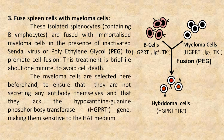The myeloma cells are selected beforehand to ensure that they are not secreting any antibody themselves, and they lack the hypoxanthine guanine phosphoribosyltransferase (HGPRT) gene, making them sensitive to the HAT medium.